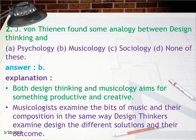Question 2: J. von Thenen found some analogy between design thinking and: a) psychology, b) musicology, c) sociology, d) none of these. Answer: b. Explanation: Both design thinking and musicology aim for something productive and creative. Musicologists examine the bits of music and their composition; in the same way, design thinkers examine design, the different solutions, and their outcomes.